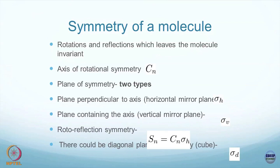Sometimes people use Cn synonymously as an element, and when they write the set for the Cn group, you write identity, Cn, Cn squared, and so on till Cn to the power of n minus 1. So it is used sometimes also as a generator. Besides the axis of symmetries of various rotational 2π/n rotations, you could also have planes of symmetry.